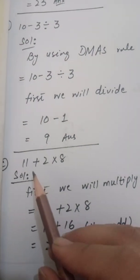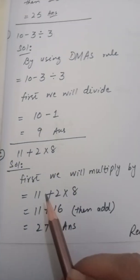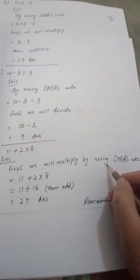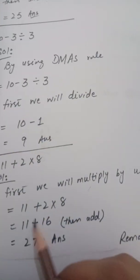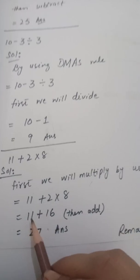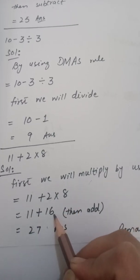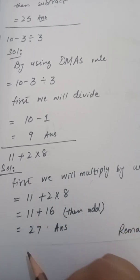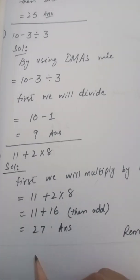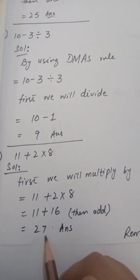Part number E, see 11 plus 2 multiply by 8. By using DMAS, first we will multiply by using DMAS rule. So what will you do first? Multiply. Here you have rewritten the question. When you multiply 2 by 8, what came? 16 plus 11. Then what will you do? Then you will add. 11 plus 16. What answer will come? 27.